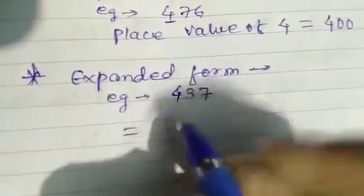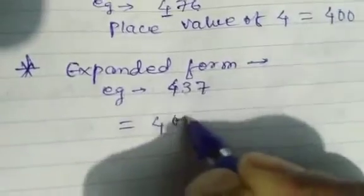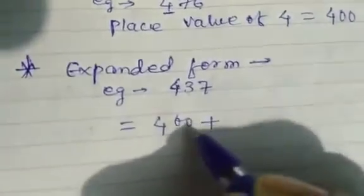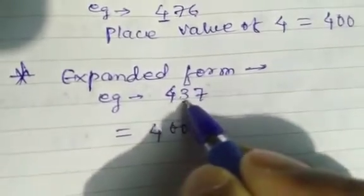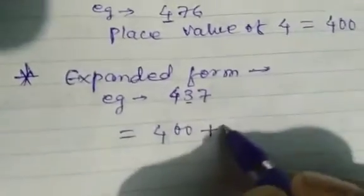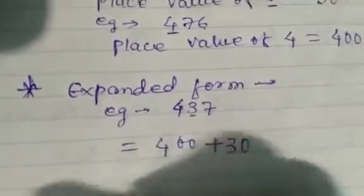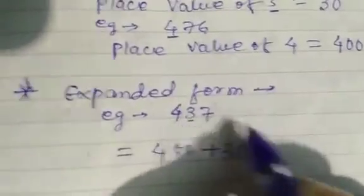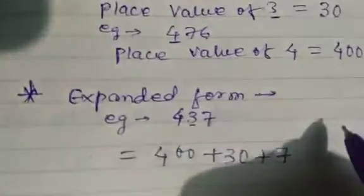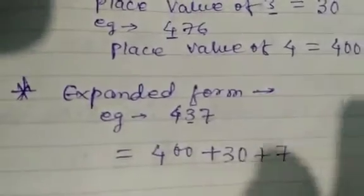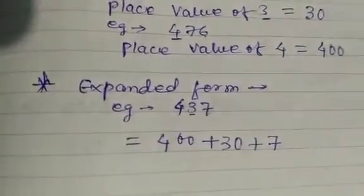Then plus — after the 4, there is 3. So we write the place value of 3: write 3, and after 3 there is only 1 digit, so we write 30. Then plus — then 7: after 7 there are no digits, so we just write 7. Therefore, the expanded form of 437 is 400 + 30 + 7.